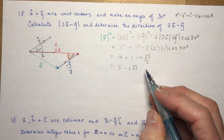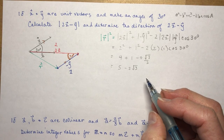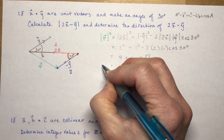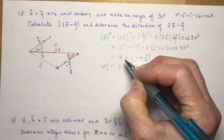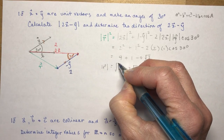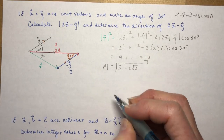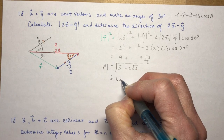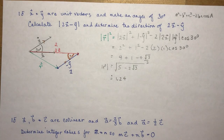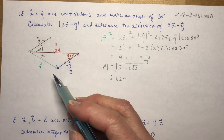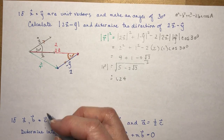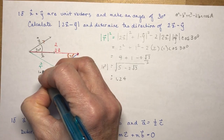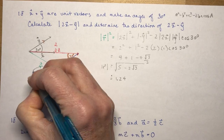So the magnitude of r is the square root of (5 − 2√3), which comes out to approximately 1.24.